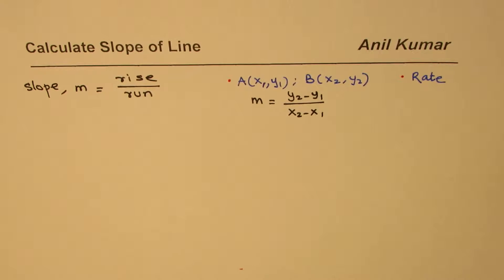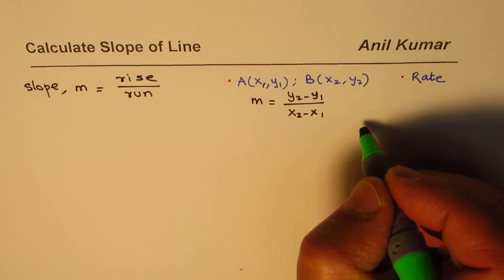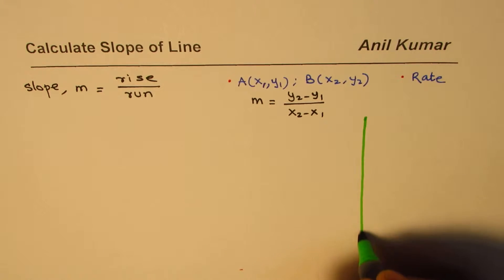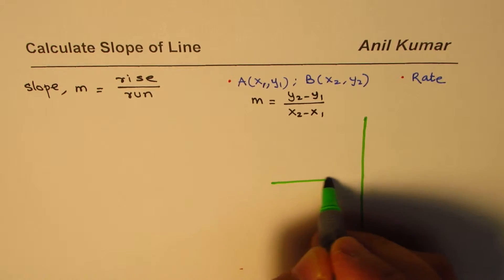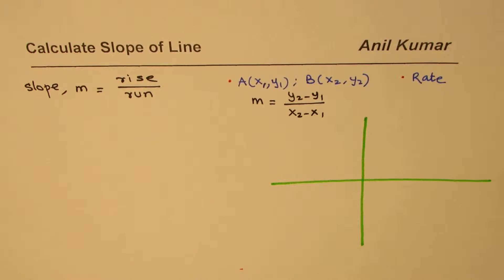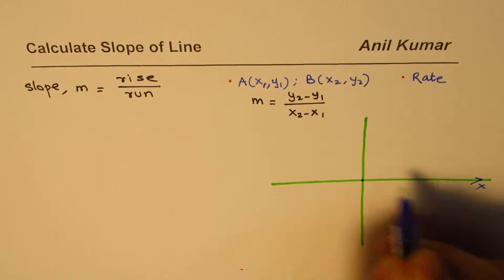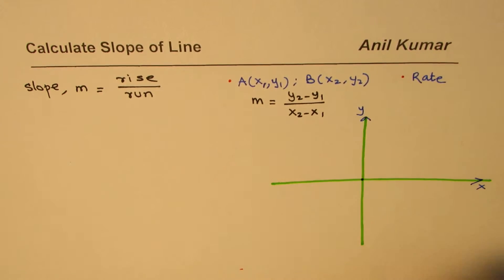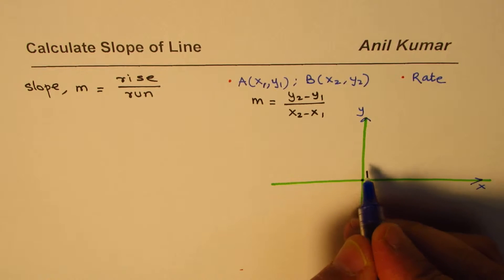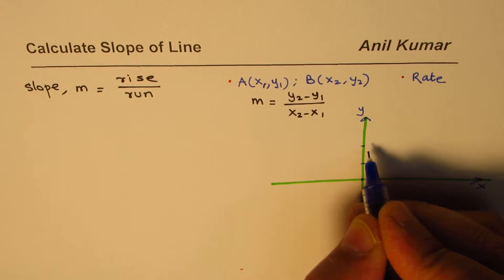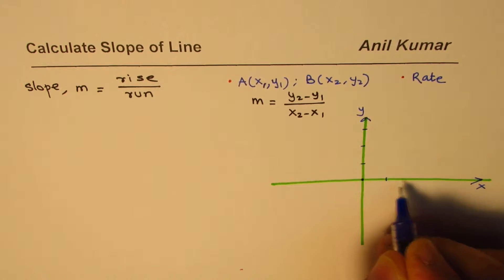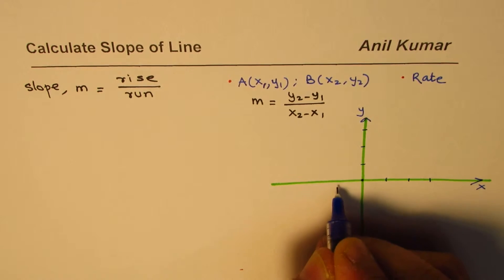Let us take an example. What we will do here is we will sketch a graph and find slope for different conditions. Let's say this is the origin, that is the x-axis, this is the y-axis for us. We'll make a small scale here, three points on each side.